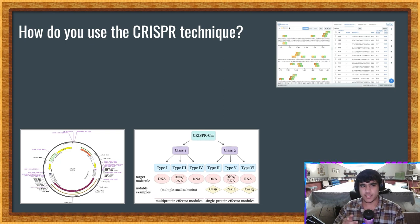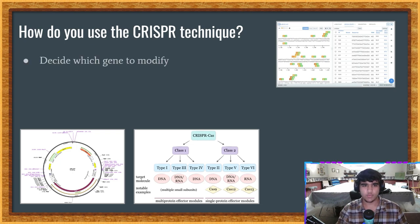First, they decide which gene to modify. For example, if they wanted to modify the yeast that is used to brew beer. Secondly, they decide which endonuclease to use.